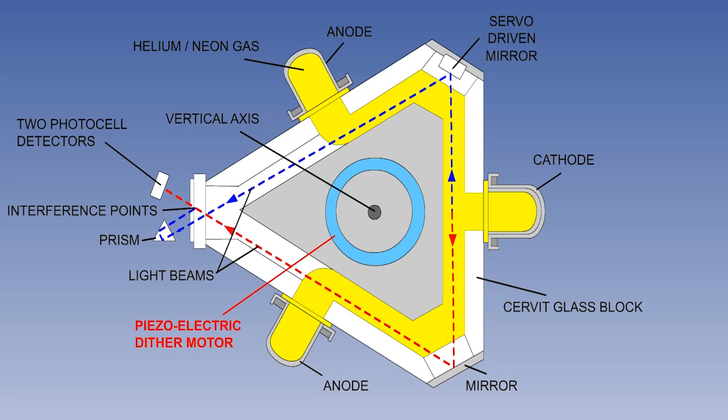That concludes this lesson on the ring laser gyro. The next one looks at how the angular rotation rate information is referenced to the horizontal and to direction on the earth.